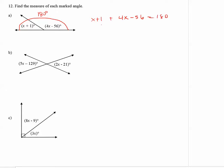Add like terms on the left. X plus 4x is 5x. 1 plus negative 56 is negative 55. So we have 5x minus 55 equals 180. Now to get x by itself, we need to add the 55 over to the other side with the 180. So we're doing the opposite of subtraction, we're adding. So now we have 5x equals 180 plus 55. And that sum is 235.